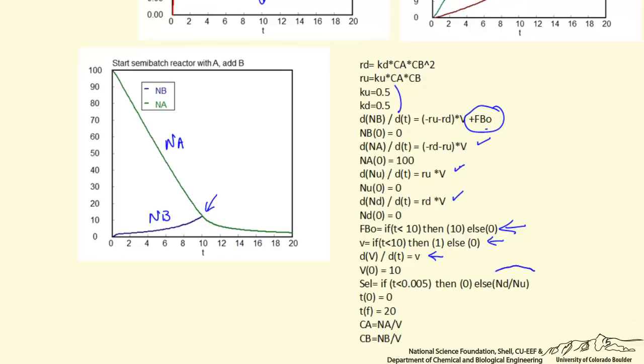Calculate the selectivity, it's the ratio of the number of moles of D and the number of moles of U. For really small times, we don't calculate the selectivity because at time equals 0, the number of moles of U is 0, and the program would not run because trying to divide by 0.